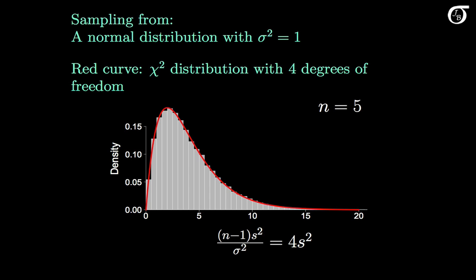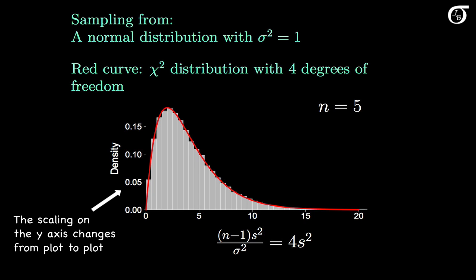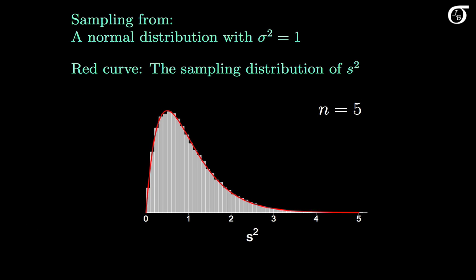Let's rescale the x-axis so that we no longer have that quantity on the x-axis, but we have s squared alone — I'm dividing all of these values by 4. The area under each curve is always going to be 1, and I'm leaving the y-axis off to lessen visual clutter. This is the sampling distribution of the sample variance when sampling 5 observations from a normally distributed population where sigma squared equals 1. The histogram of 100,000 simulated values of s squared closely follows the red rescaled chi-square curve. We can see the sample variance varies about the population variance of 1, and there is some right skewness.